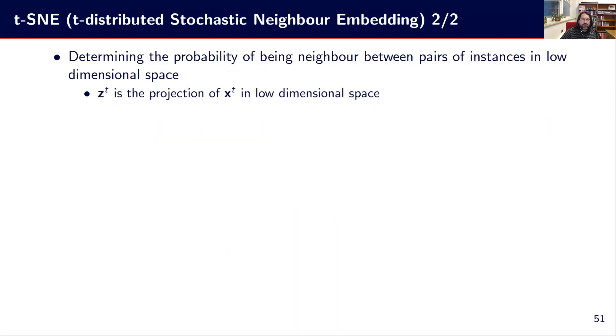So the idea is to determine the probability of being neighbor between the pairs in low dimensionality space. So X^t is the projection of... Z^t is the projection of X^t in the low dimensionality space. And as such, we've got the probability of them to be neighbors. So we are looking at the probability of being neighbors in the original space in X. And now we are looking at the probability of being neighbors in the low dimensionality space. And we assume some student's t distribution for that.